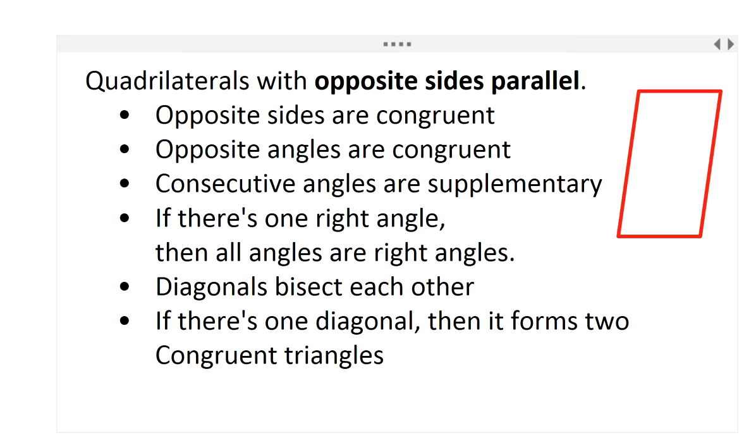Once we're able to state in class that the quadrilateral is a parallelogram, then the figure has certain properties, and those are the ones listed here. So basically, when you have a parallelogram, opposite angles—let's mark the opposite angles here—are going to be congruent. At the same time, let me mark the other two. Opposite sides will be congruent.